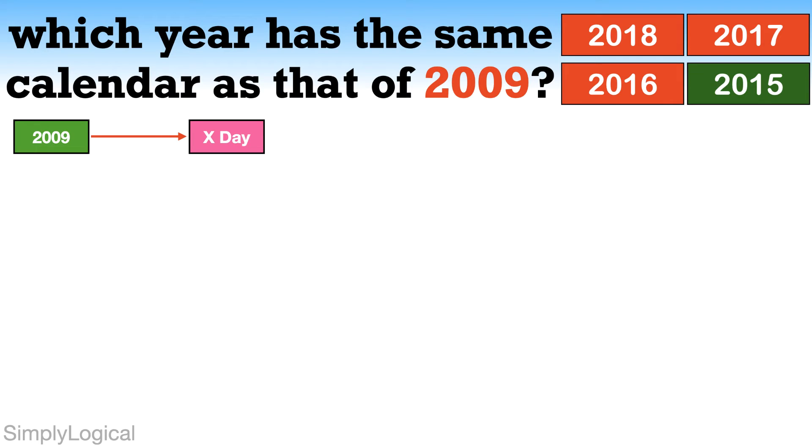It means the first day of 2010, which is the next year, will be X plus 1 day, as there is one odd day in one ordinary year 2009.